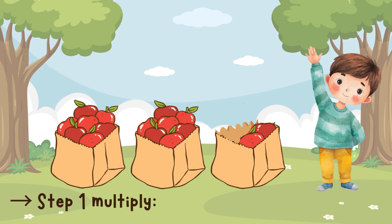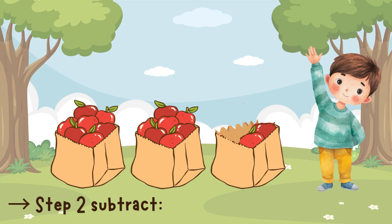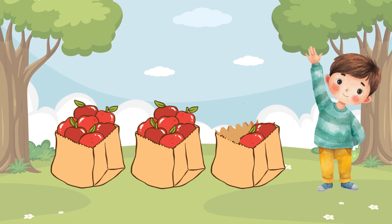Sam has three bags with seven apples each. He gives away five apples. How many apples are left? Step one: multiply — three times seven equals twenty-one. Step two: subtract — twenty-one minus five equals sixteen. Nicely done.